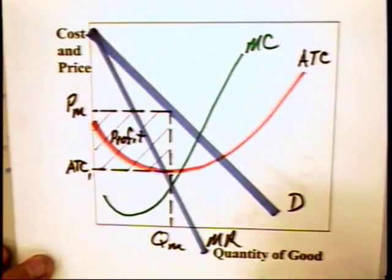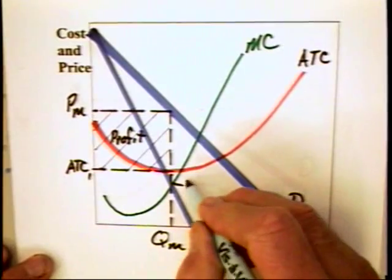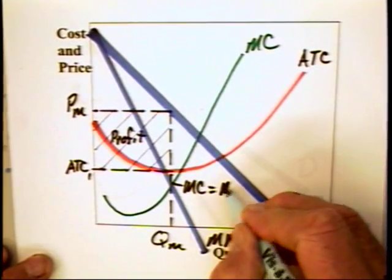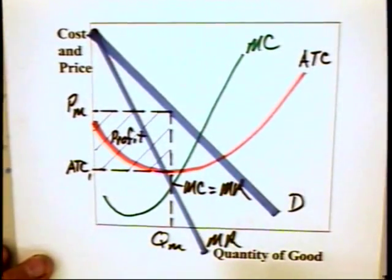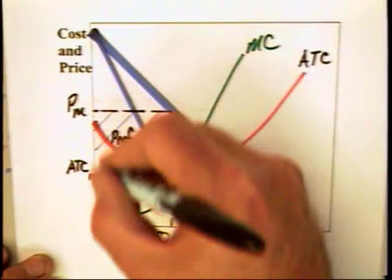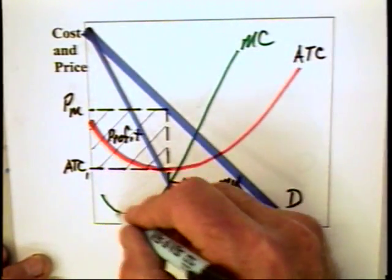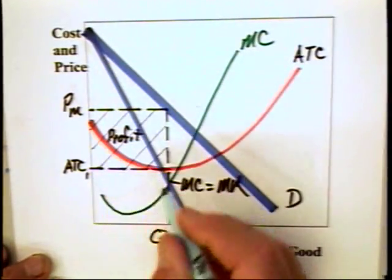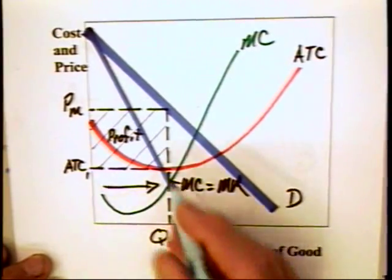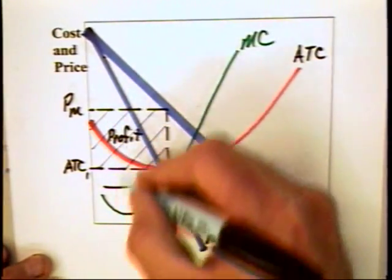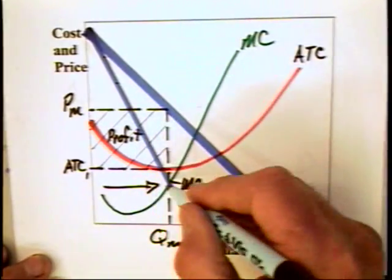What we noted is that a monopolist will produce where marginal cost is equal to marginal revenue, which is the rule that all firms are going to follow. It's going to weigh off the marginal revenue that's on this curve of each unit with the marginal cost on this one, and it's going to continue to produce so long as the marginal revenue points are above the points on the marginal cost curve.